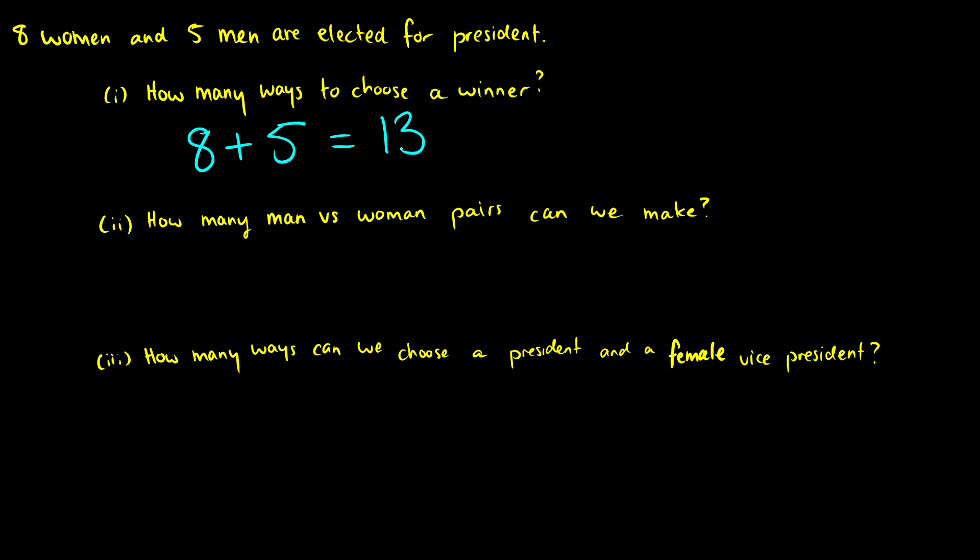This makes sense because there's 13 participants; we're just breaking them up into cases of men and women. So either a woman can win or a man can win, therefore eight plus five is 13.